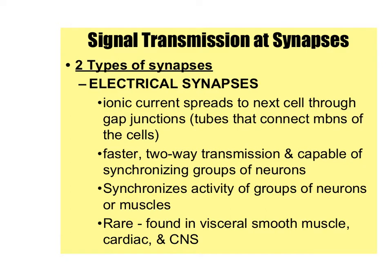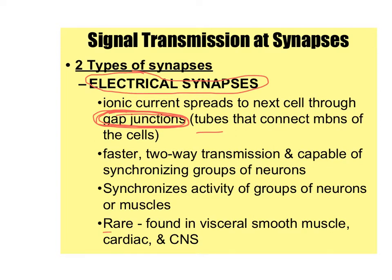There are two types of synapses when it comes to neurons. The first and rarer type is electrical synapses — also called gap junctions, which is the term I always use. These are tubes that directly connect the membranes of one neuron to the next. You do not need neurotransmitters to cross a gap junction because there is no synapse — the two neurons are directly connected, so one action potential goes directly from one neuron to the next. These are rare and are found in visceral smooth muscle and heart muscle.